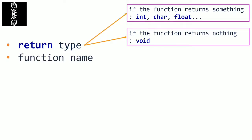Then you have the function name. Same as variables, each function needs its own name, and the function naming follows the same rules as variables. Then you have an important part: the parameters, also called the arguments. The parameters are some data that the function can use to perform its task. For example, if we want to make a function that calculates the square of a number, we will give that number to the function. If we compare it to a cook chef, parameters are like the ingredients we give to the cook so that he can cook using them.